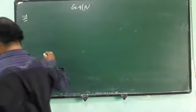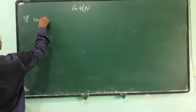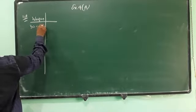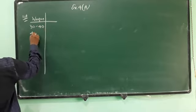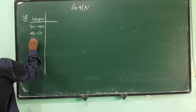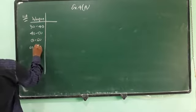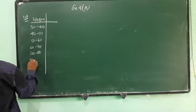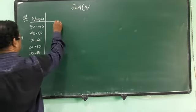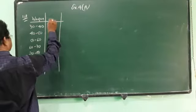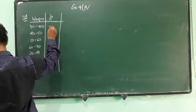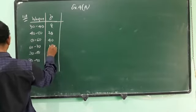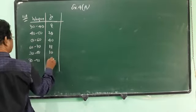Let's write this one. Wages is given in rupees. The values are 30-40, then 40-50, then 50-60, then 60-70, then 70-80, then 80-90. And the number of workers, that is frequency, is given as 8, 20, then 40, then 18, then 10, then it is 4.